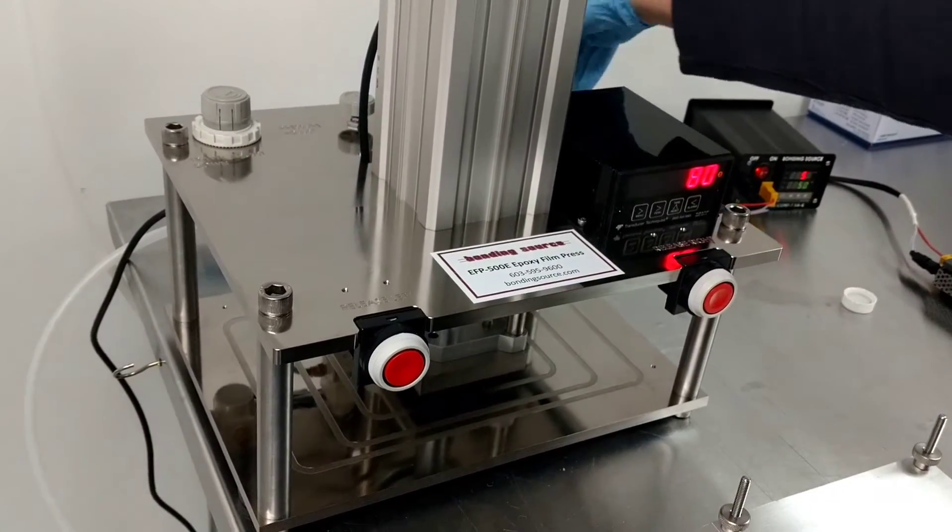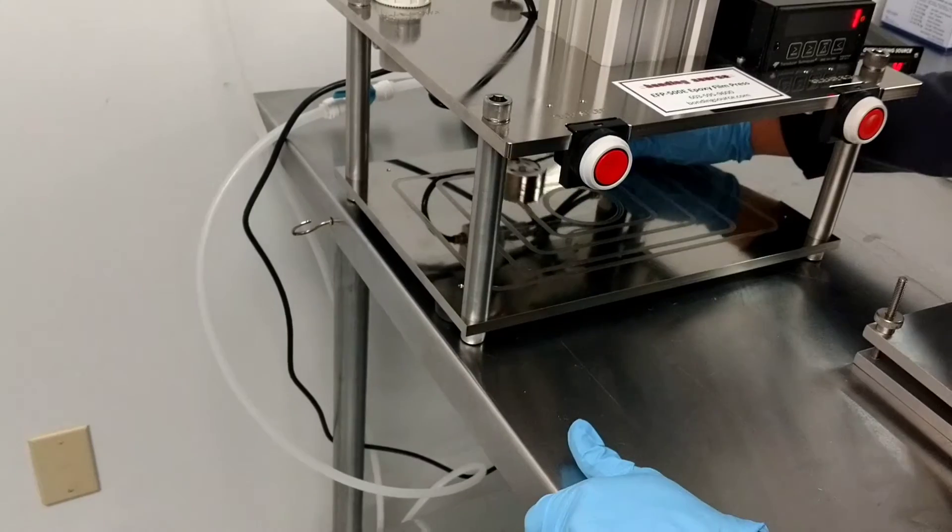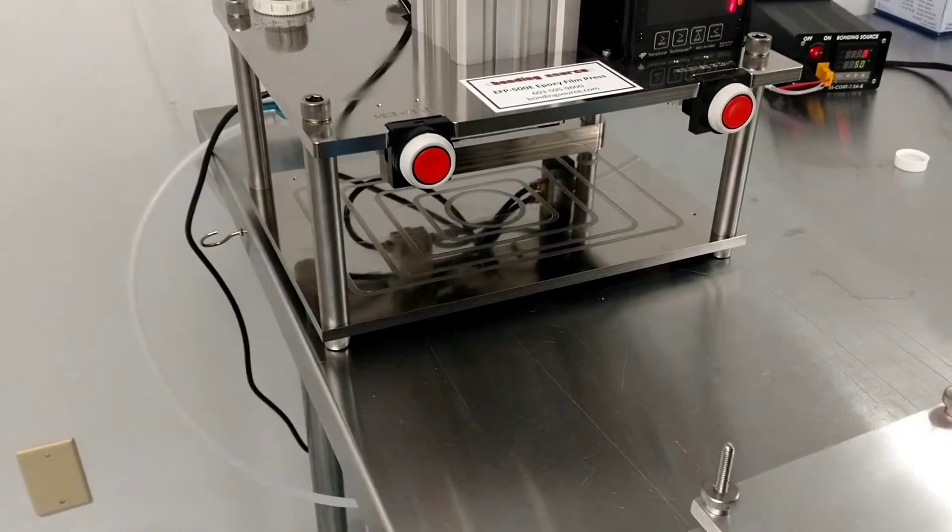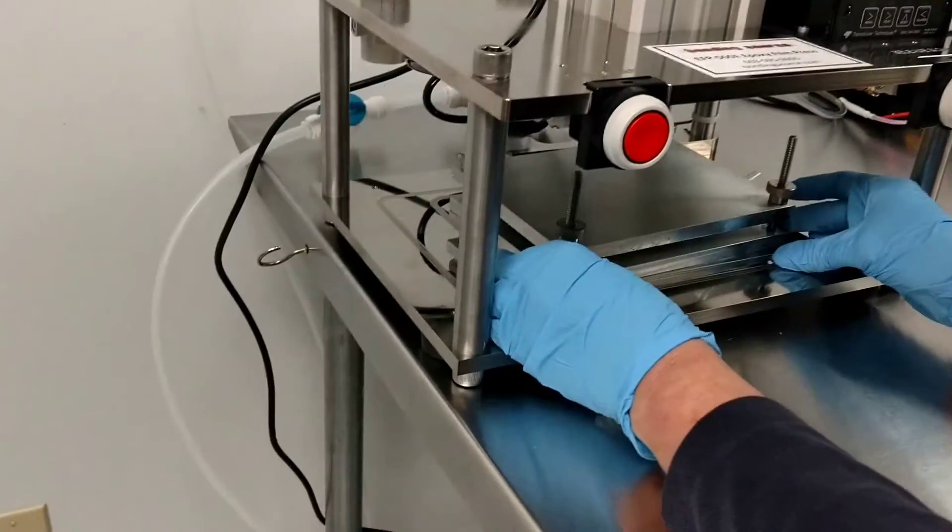All right, good. We're good to go. So we'll push the load cell back out of the way. We'll place the fixture in. Make sure it's centered under the piston.